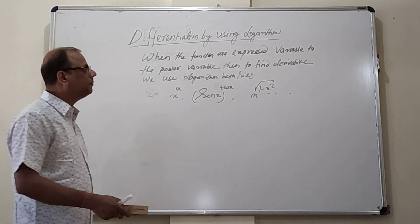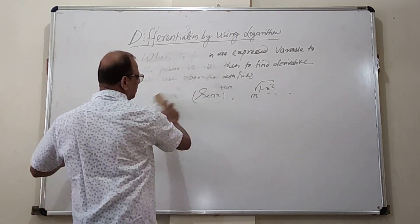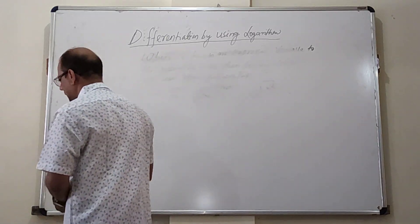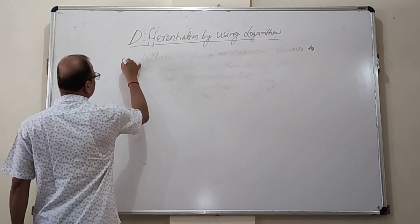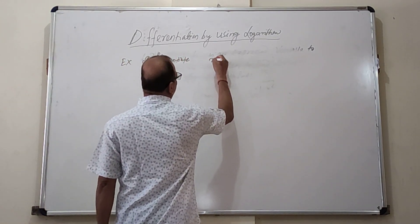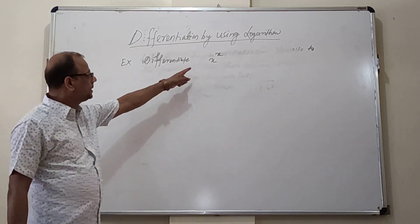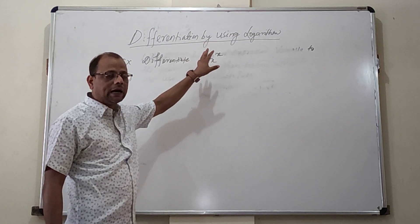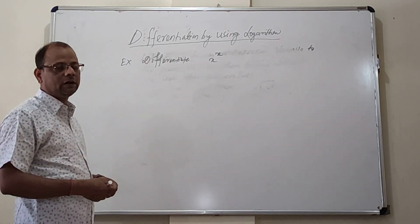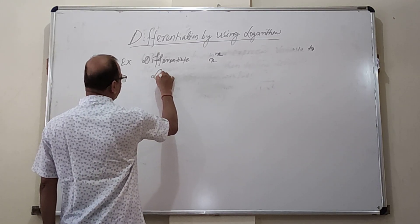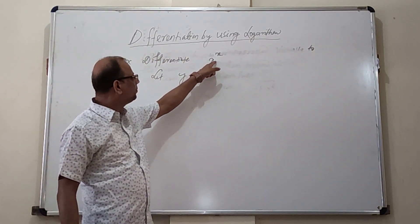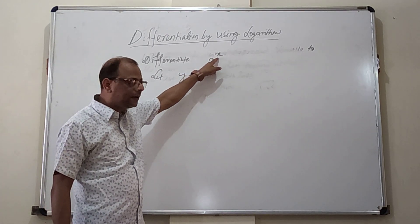Let us consider some examples. Example 1: Differentiate x to the power x. This is a variable-to-the-power-variable function. Let y equal x to the power x. Since the function is given in the form of variable x, we let it equal y.